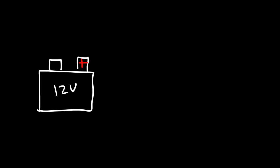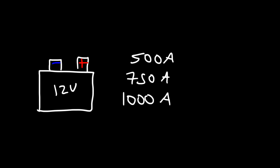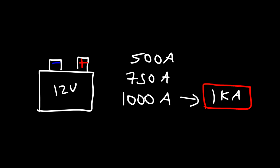If you're dealing with a car battery, it can dish out a lot more current. You don't want to short-circuit it because you can get serious sparks. But typically when starting up a car, they can crank out 500 amps, some 750, and some even 1,000. So they can discharge a lot of current. 1,000 amps is the equivalent of 1 kiloamp. So anytime you see kiloamps, it represents 1,000 amps — 5 kiloamps would be 5,000 amps.